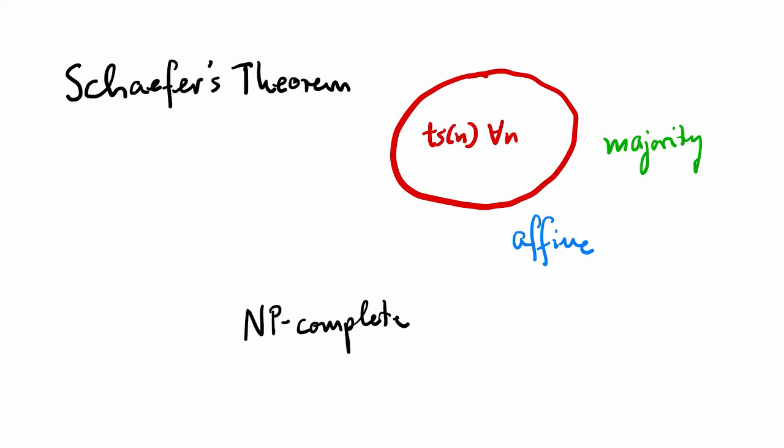Schaefer's theorem provides a complexity classification for Boolean constraint satisfaction problems. It states that each such problem is NP-complete or falls into at least one out of three classes that can be solved in polynomial time. Today I will motivate this theorem, state it formally, and finally will also prove it.